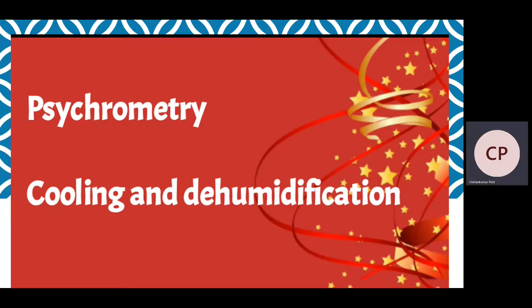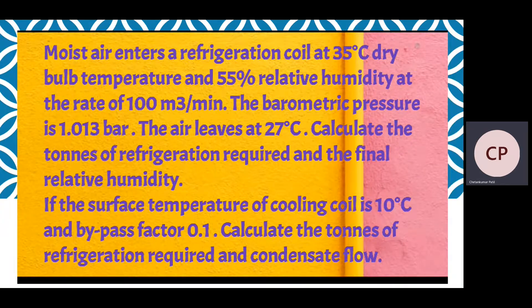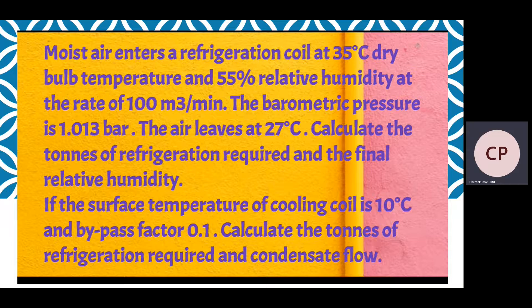Hello friends, this is Priyanka. Today we are going to solve a problem on cooling and dehumidification process with the help of a psychometric chart. Moist air enters a refrigeration coil at 35 degree Celsius dry bulb temperature and 55% relative humidity at the rate of 100 meter cube per minute. The barometric pressure is 1.013 bar. The air leaves at 27 degree Celsius. Calculate tons of refrigeration required and the final relative humidity. If the surface temperature of cooling coil is 10 degree Celsius and bypass factor 0.1, calculate the tons of refrigeration required and condensate flow.